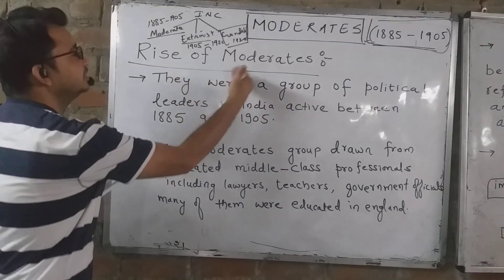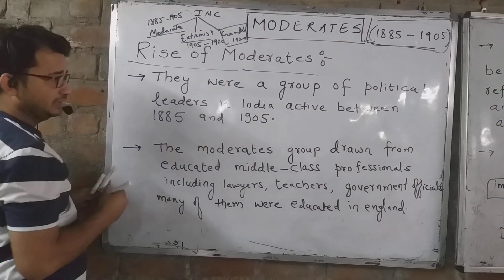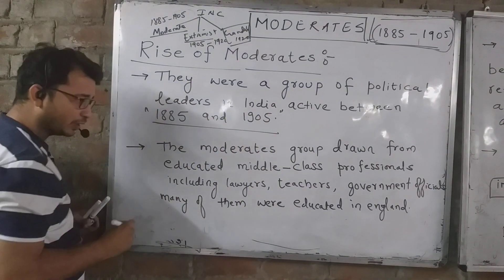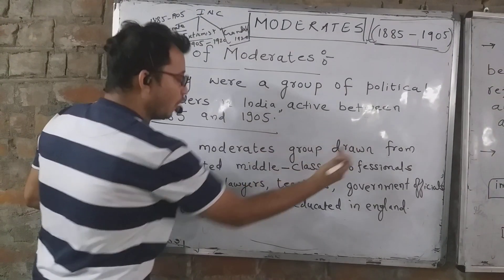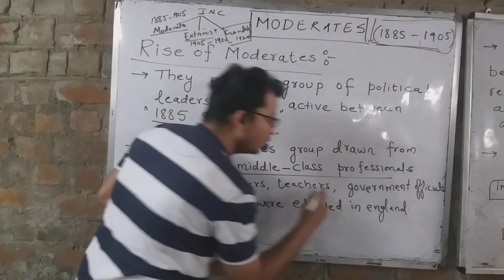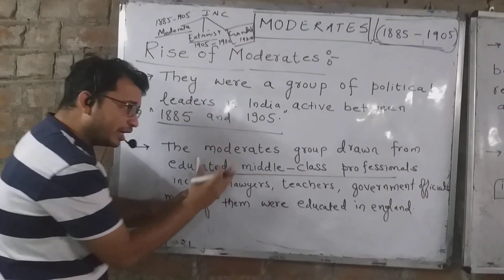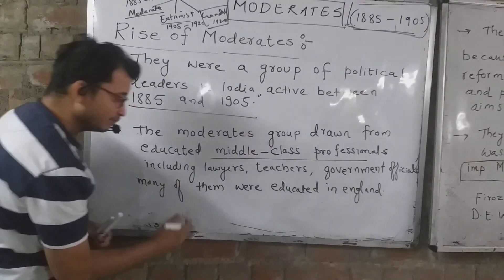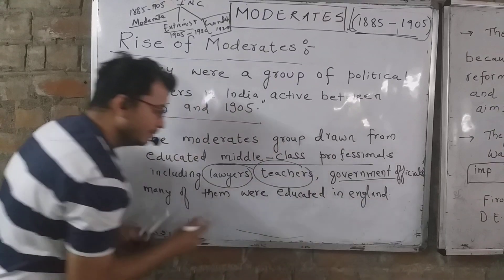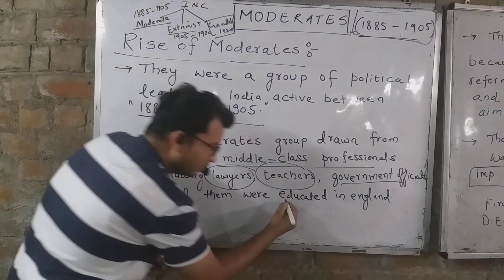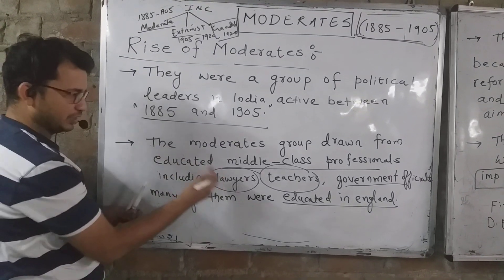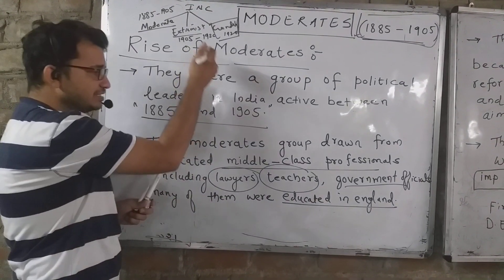The moderates were a group of political leaders in India who were active between 1885 to 1905 — very very important. The moderate groups drew from the educated middle class: lawyers, teachers, government officials. Many of them took their education in England. For example, Dadabhai Naoroji.